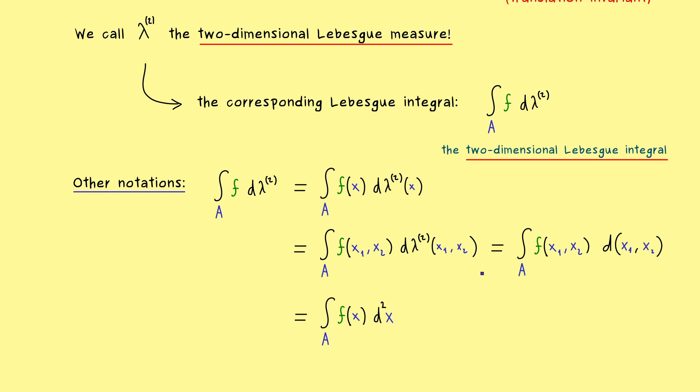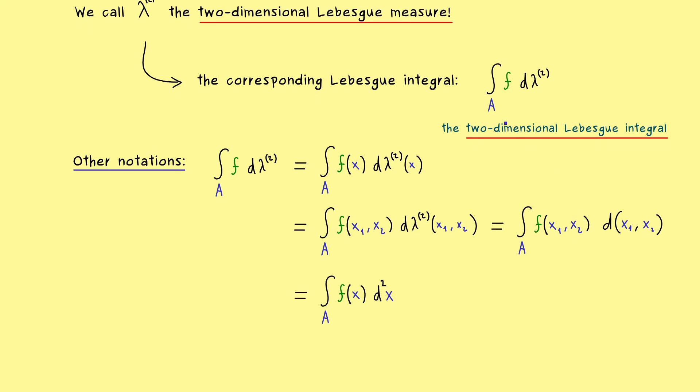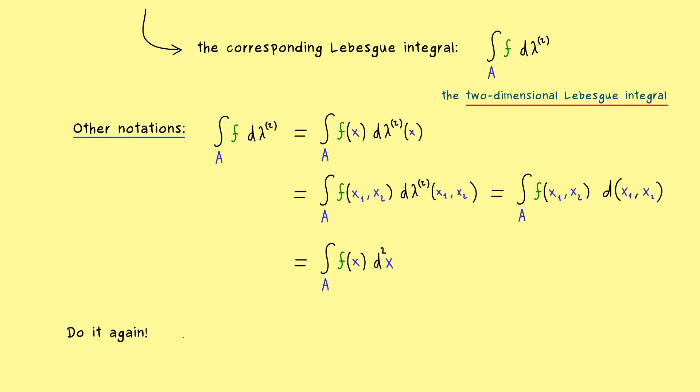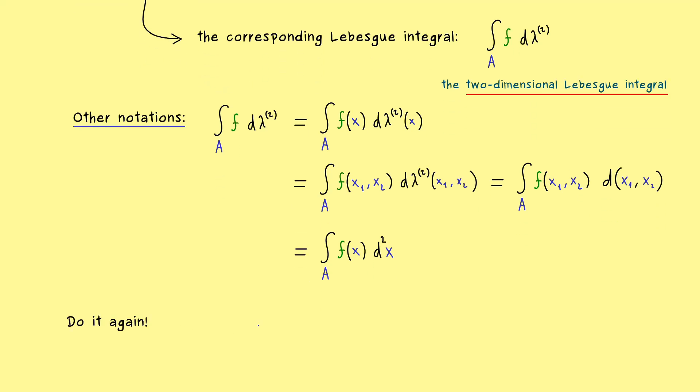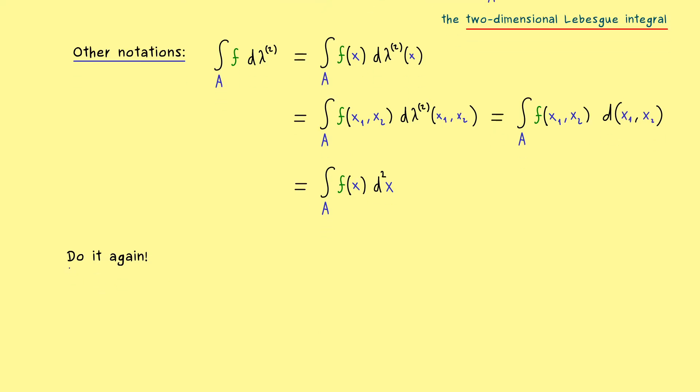Okay, there we have it. This is how we get our two-dimensional Lebesgue integral just by performing a product measure. And obviously, we can do this construction again and again to get the higher dimensional Lebesgue measures. So for example, now we could do the same reasoning in R3.